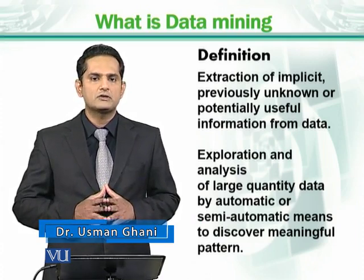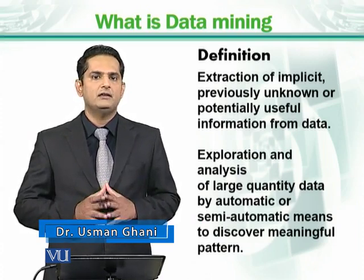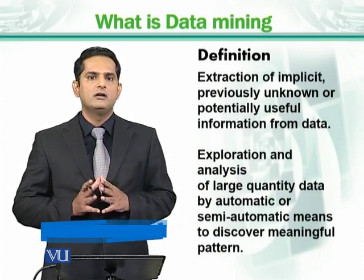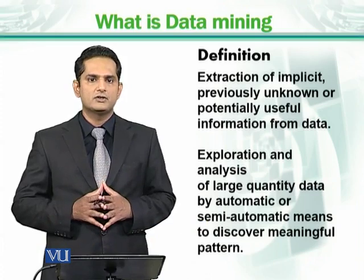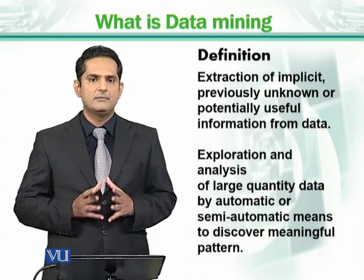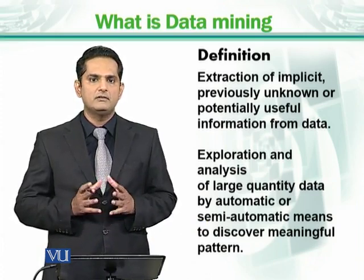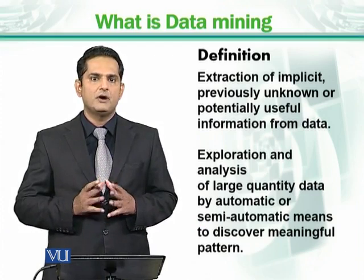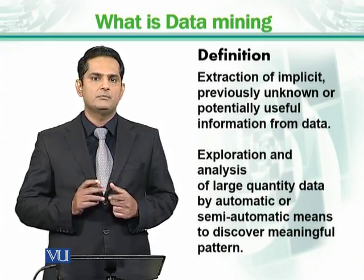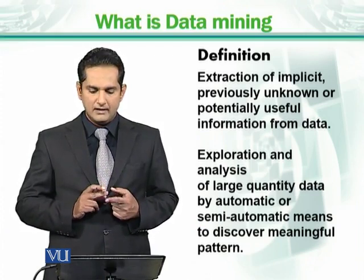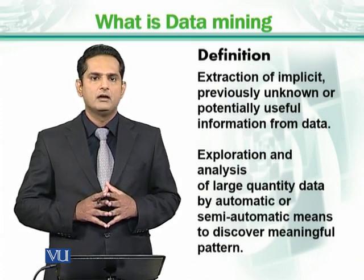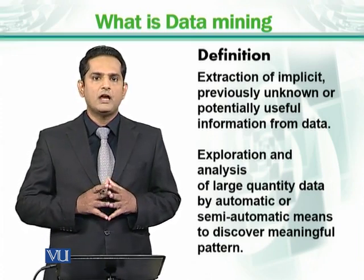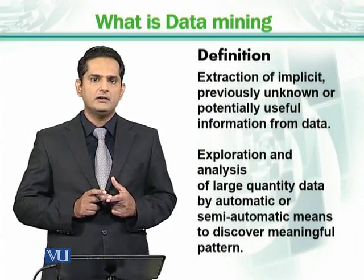Here I have focused on only three things, although there can be different other parts of this definition. For simplicity, I will describe only these three parts. Number one is implicit knowledge. What is implicit? There are two types of information — one is explicit and the other one is implicit.